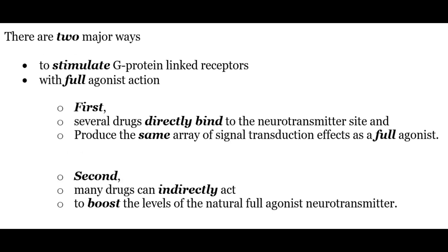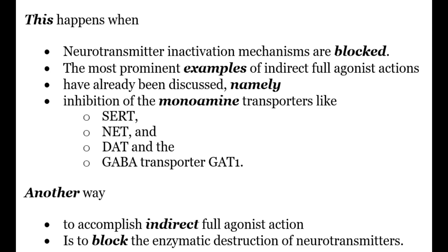There are two major ways to stimulate G-protein linked receptors with full agonist action. First, several drugs directly bind to the neurotransmitter site and produce the same array of signal transduction effects as a full agonist. Second, many drugs can indirectly act to boost the levels of the natural full agonist neurotransmitter. This can be achieved by two methods: inhibition of monoamine transporters like SERT, NET, DAT, and GAT1, or by blocking the enzymatic destruction of the neurotransmitters.